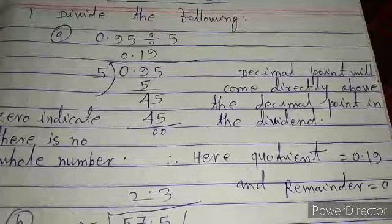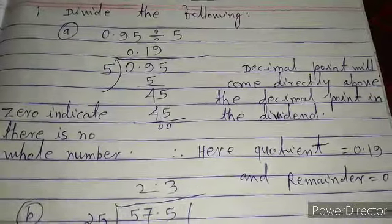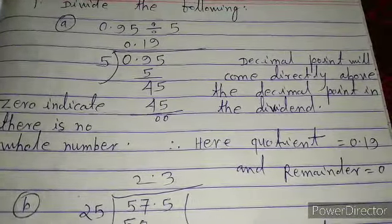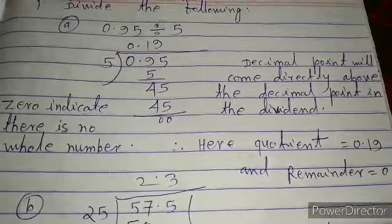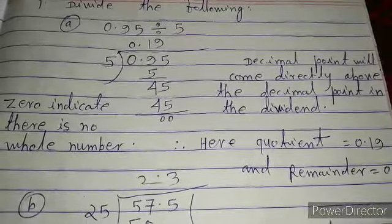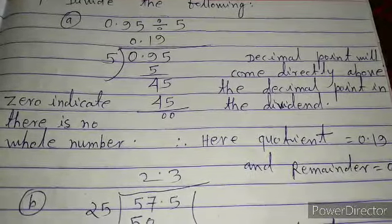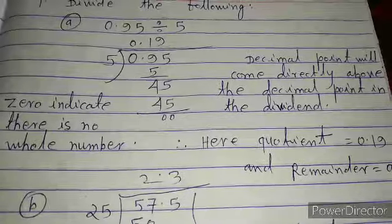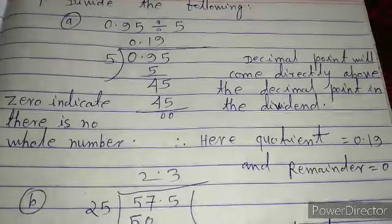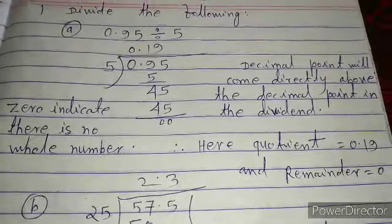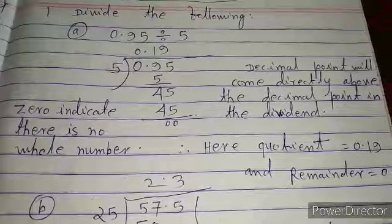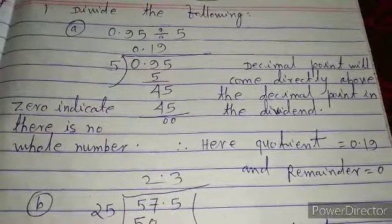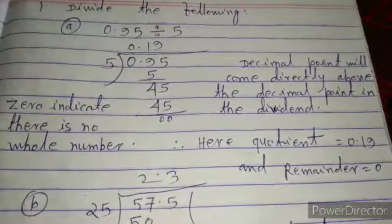For example, when we divide 0.95 by 5, the quotient is equal to 0.19. The decimal point comes directly above the decimal point in the dividend, so the quotient is 0.19.